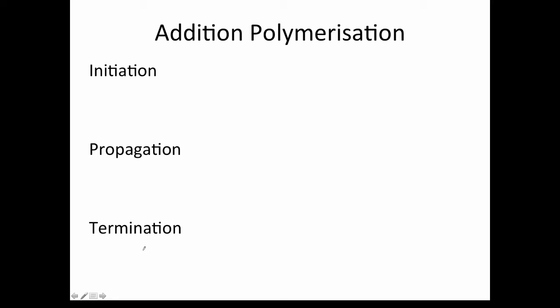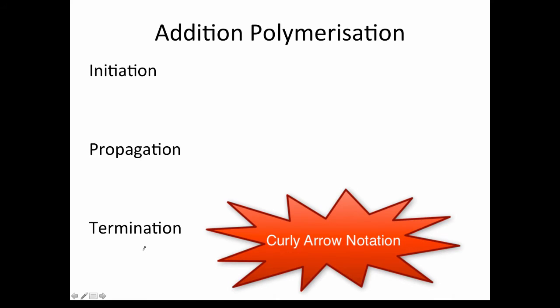In order to understand the mechanisms of each of these steps, I need to briefly introduce you to curly arrow notation. Curly arrow notation is used to show the movement of electrons. When drawing a chemical process, the arrows allow us to visualize how the electrons are moving.